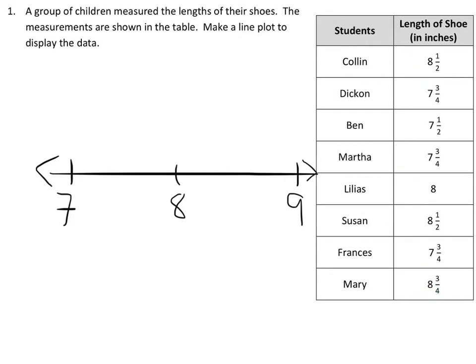Now, every time I find a match on my number line, I have to label it. So I do notice that I have Lilius at a perfect eight. So this student would be right here, with a shoe size of eight.